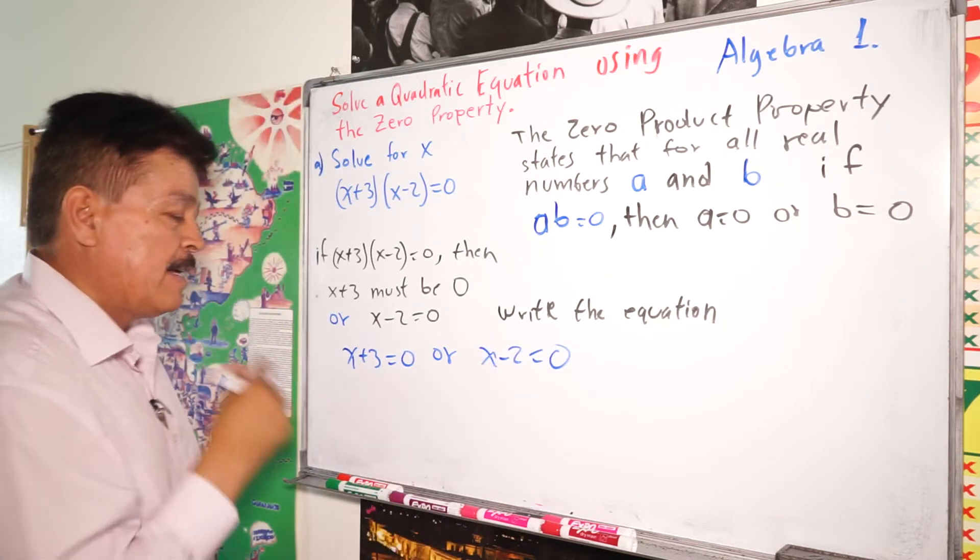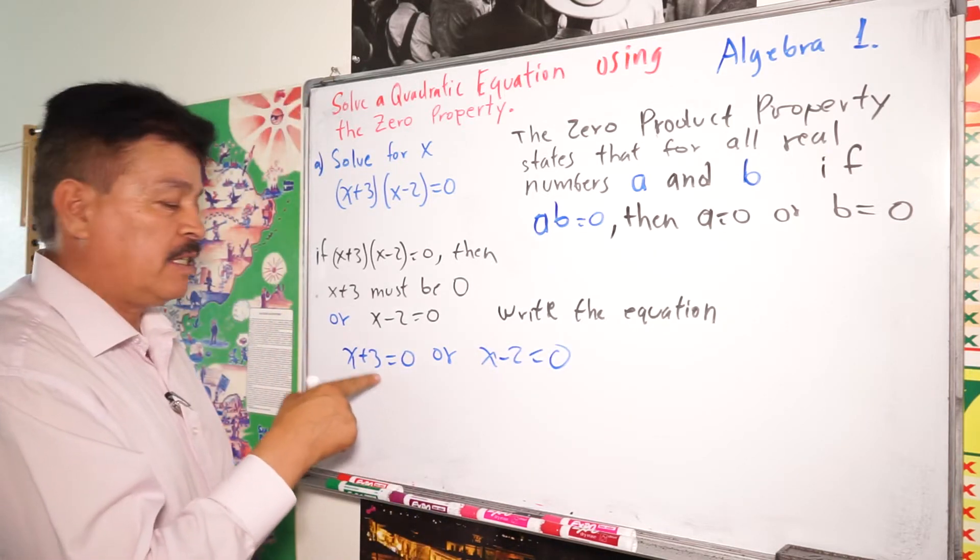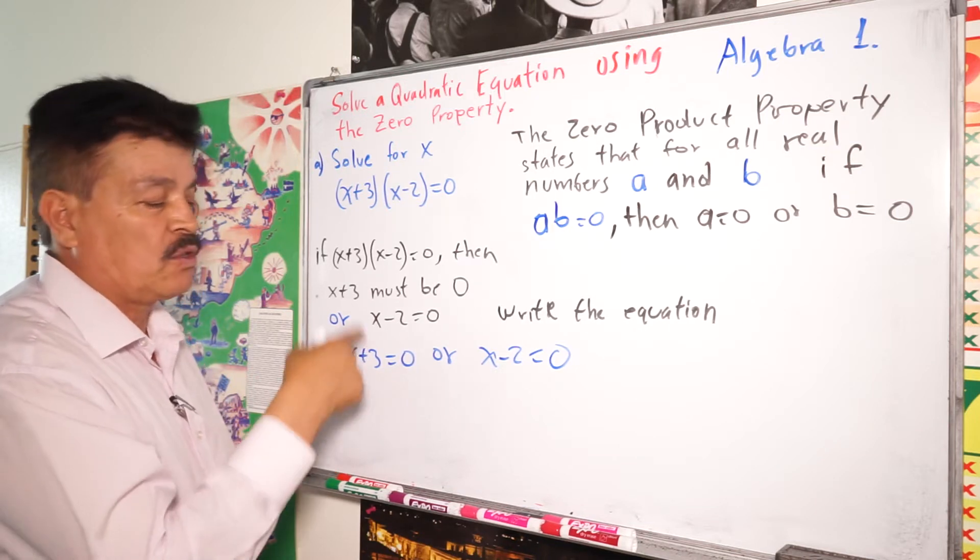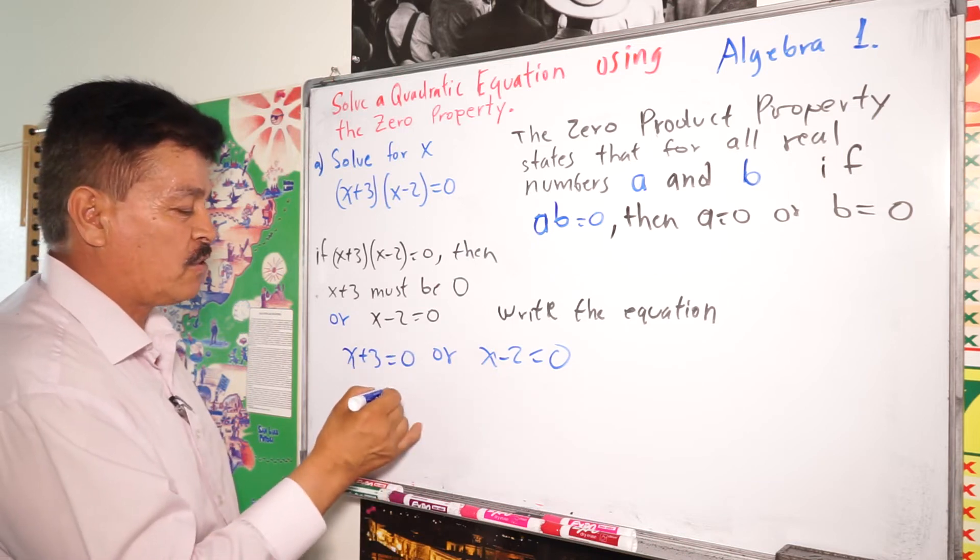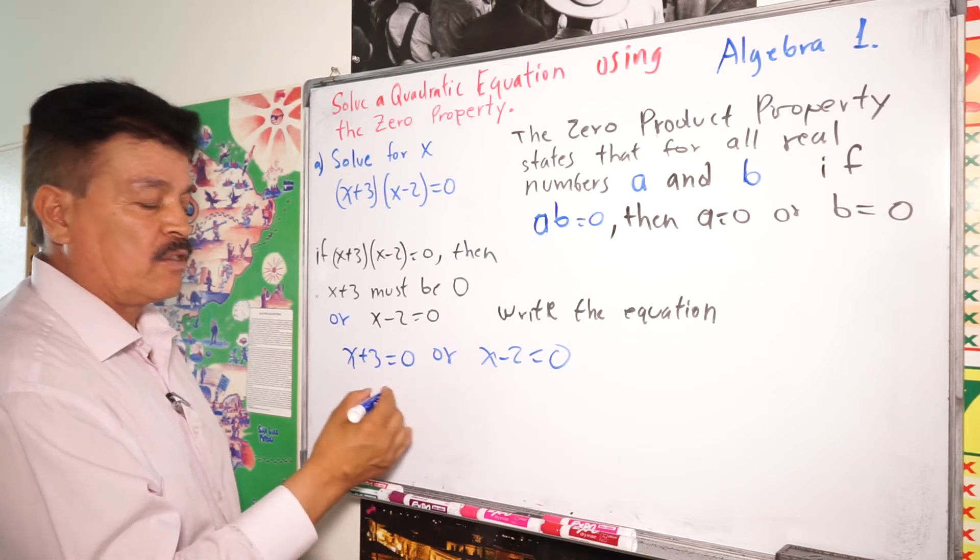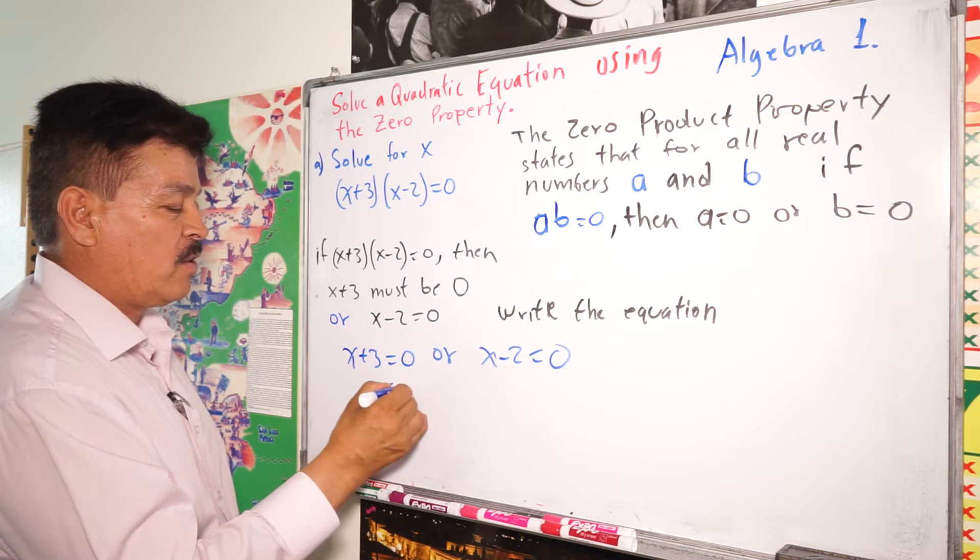See? This is addition. The 3 is adding. So you change to the other side, it's going to be as a subtraction. So here is going to be x = -3.